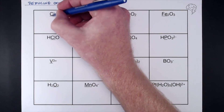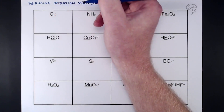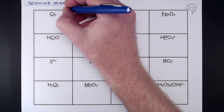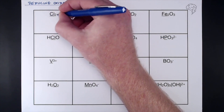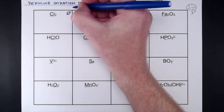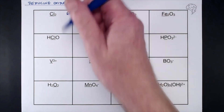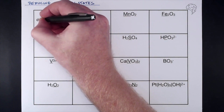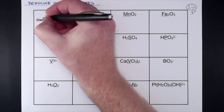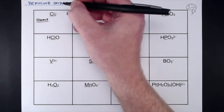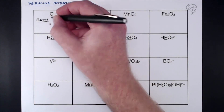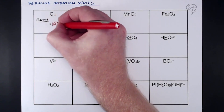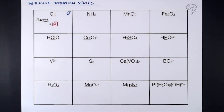First we've got chlorine — Cl₂ is the underlined one, the oxidation state I'm looking to find. The overall oxidation state here has no charge, so it's zero. Cl₂ is just an element, and the rule is that if it's just an element, the oxidation state equals zero. So the oxidation state of chlorine here is zero — because it's just an element.